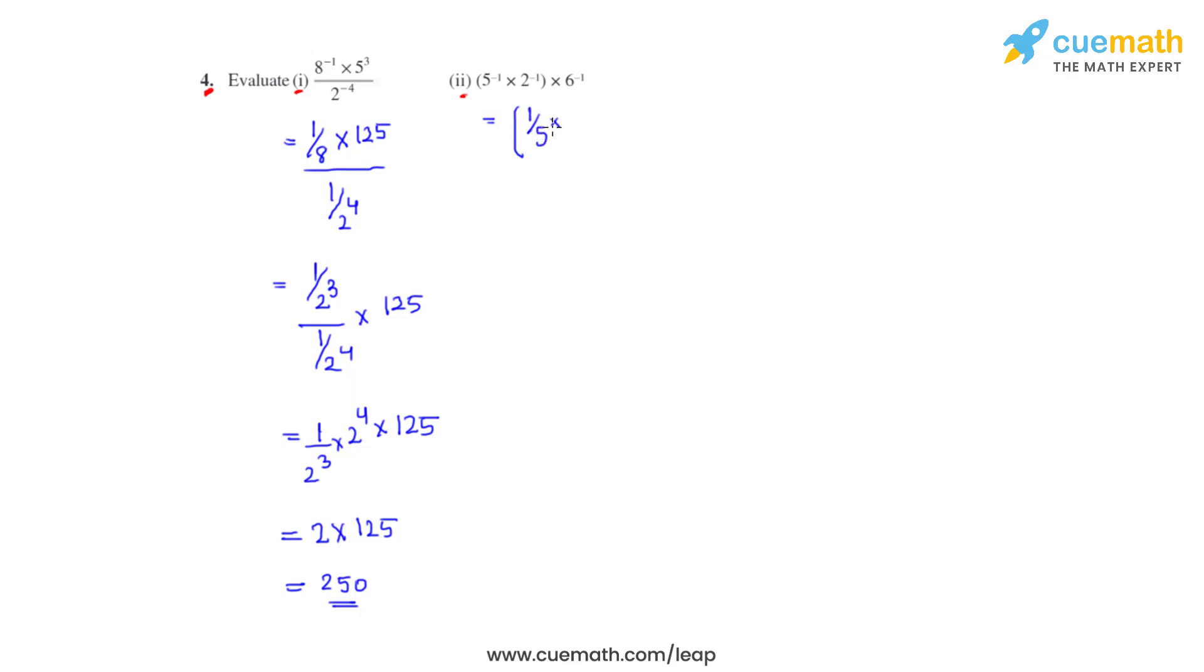1 over 5 times 1 over 2 can be written as 1 over 10, times 1 over 6. So we finally get the answer for the second bit as 1 over 60.